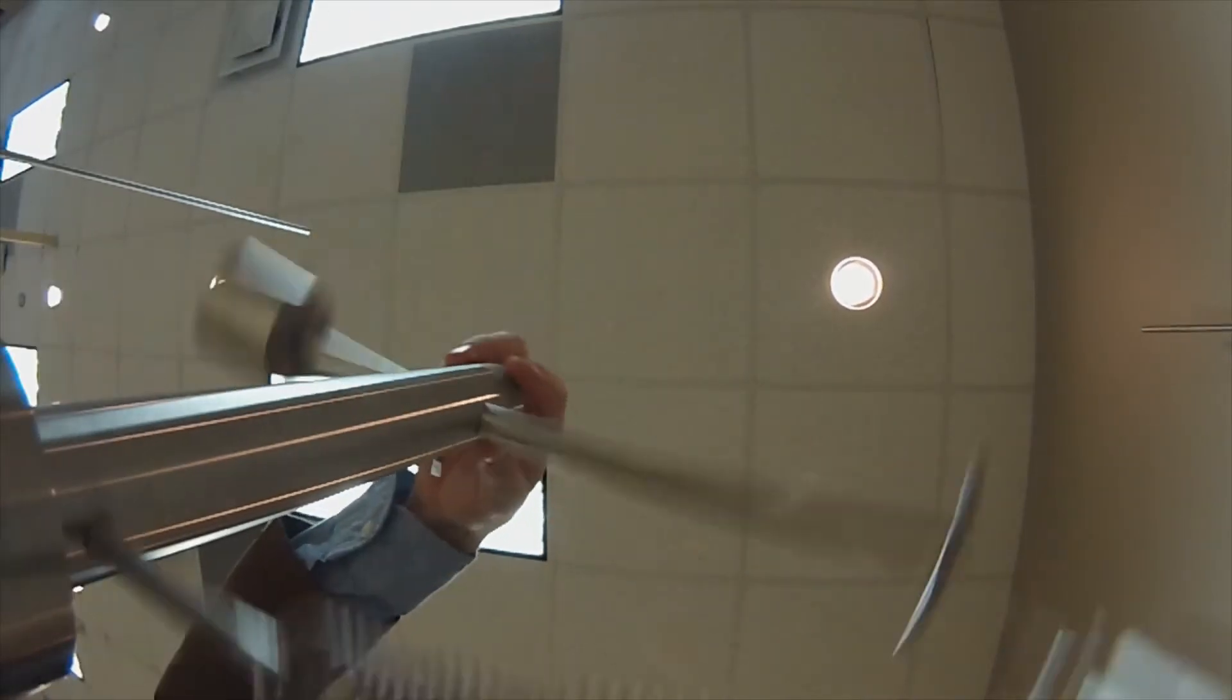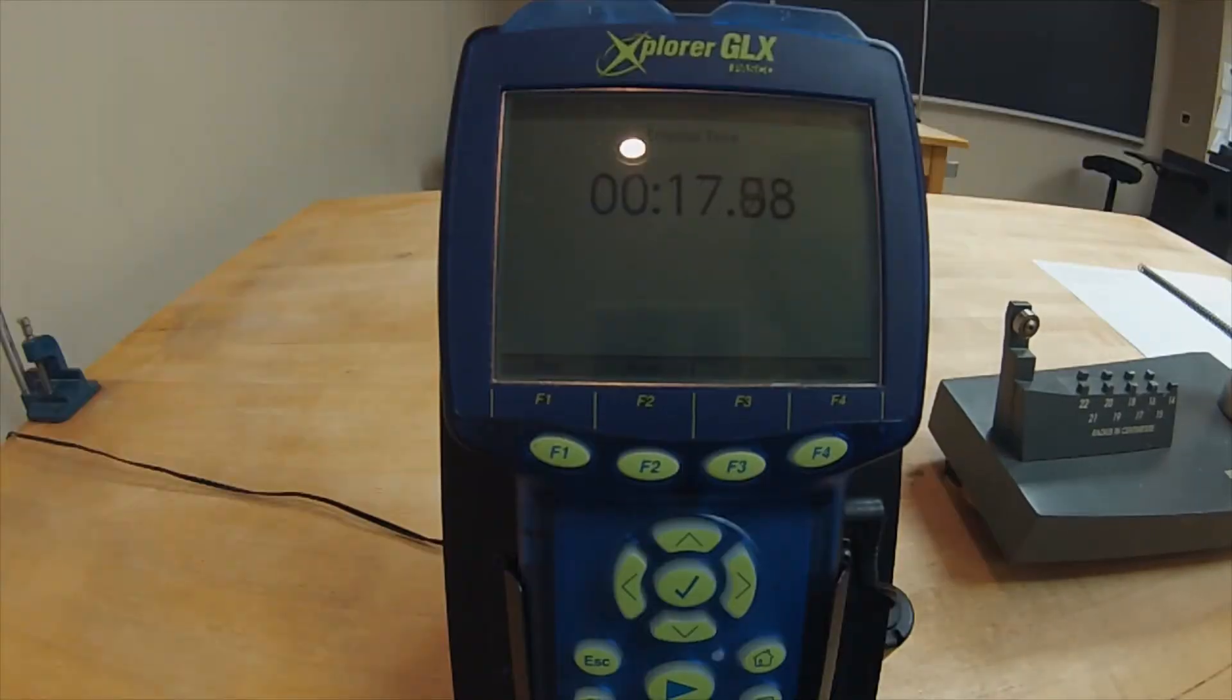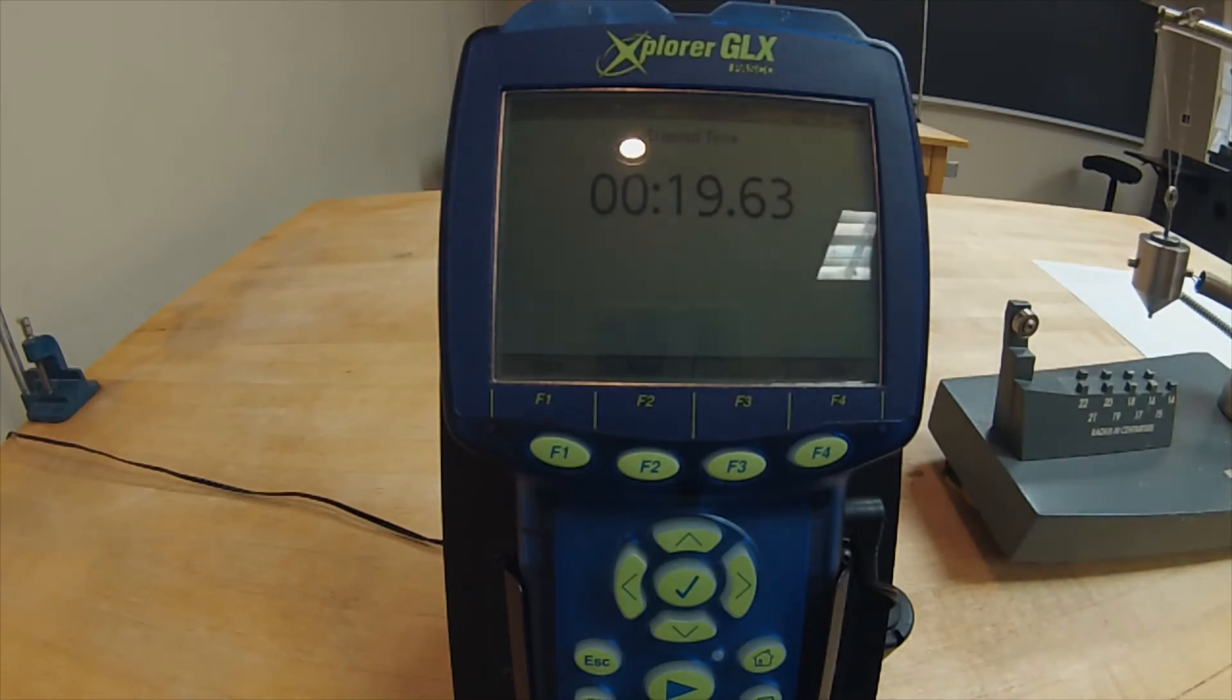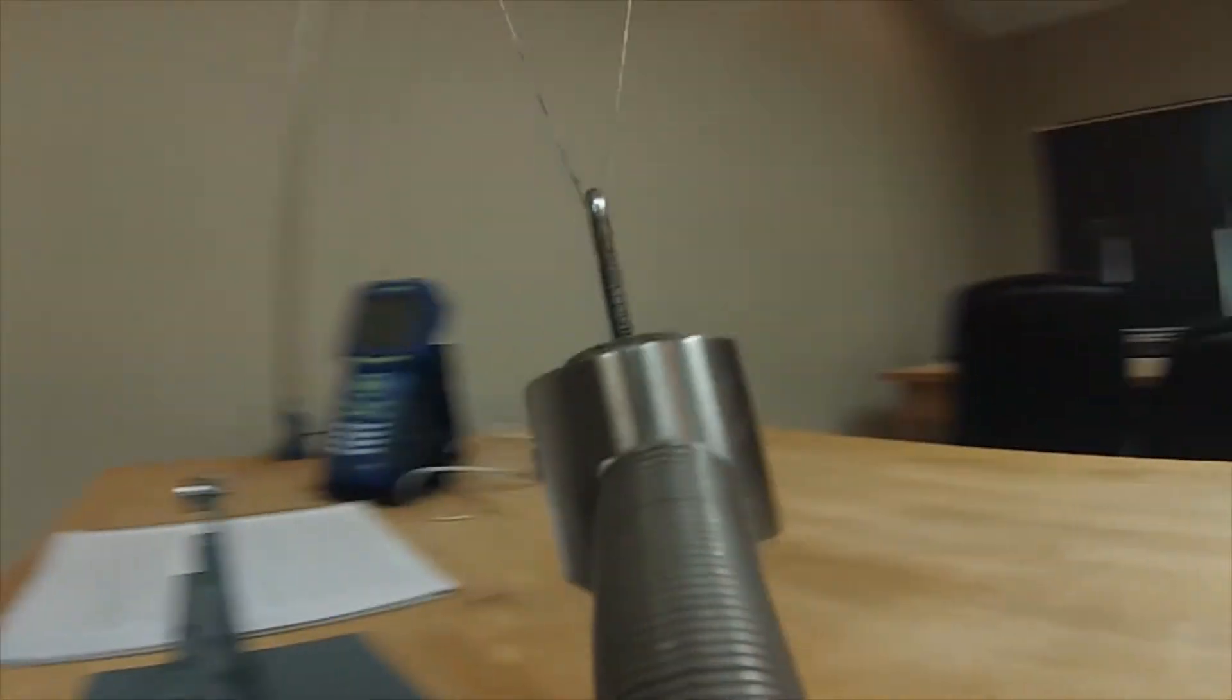You will need to complete 30 revolutions before you stop your timer. Then, by dividing this time by 30, you will have a more accurate measurement for the average duration of each revolution. This process will then need to be completed three times for the same weight of bob and radial position, and for these three initial measurements, you should see relatively similar results.